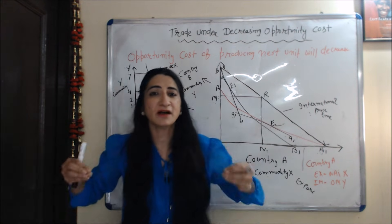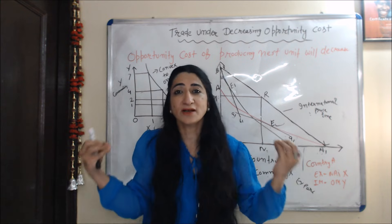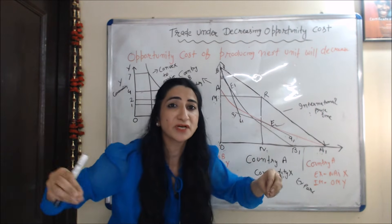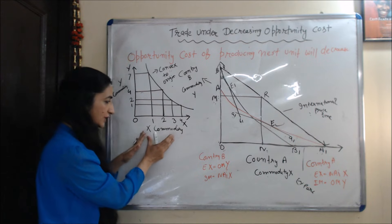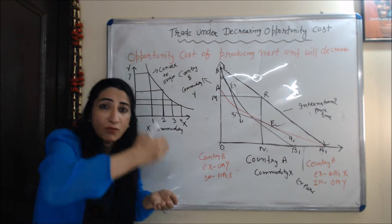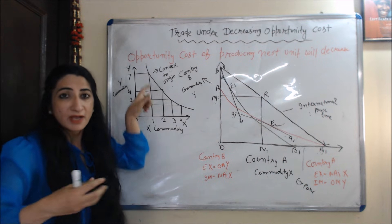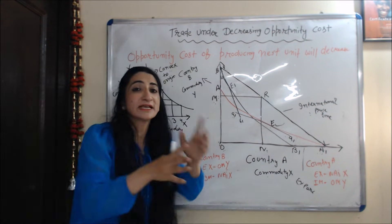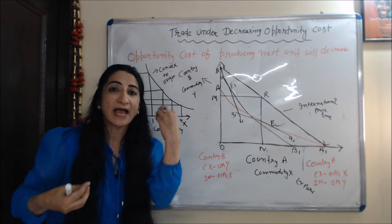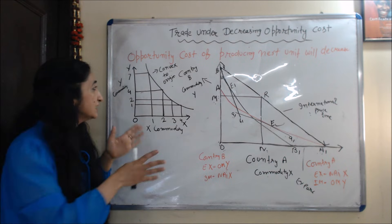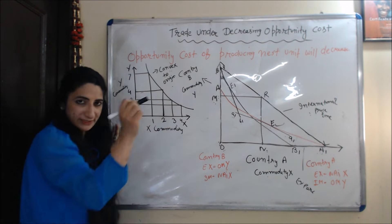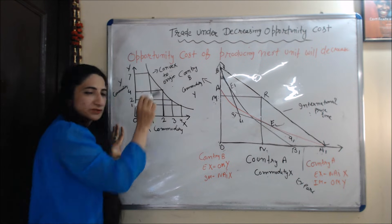Now we understand trade under decreasing opportunity cost. What is decreasing opportunity cost? In case of decreasing opportunity cost, the opportunity cost of producing the next unit will decrease. For example, on the x-axis we take X commodity and y-axis we take Y commodity. Initially, when the producer increases one more unit of X, he sacrifices three units of Y. But when the producer again increases one more unit of X, he sacrifices only two units of Y. This means the opportunity cost of X is reducing as production of X is increasing. In case of decreasing opportunity cost, we have a production possibility curve that is convex to origin.